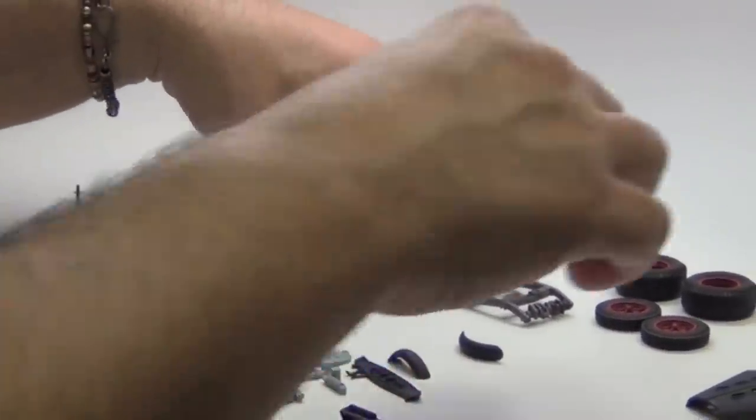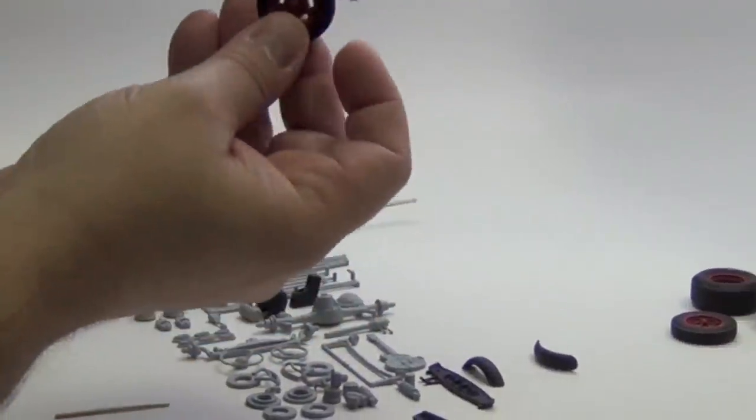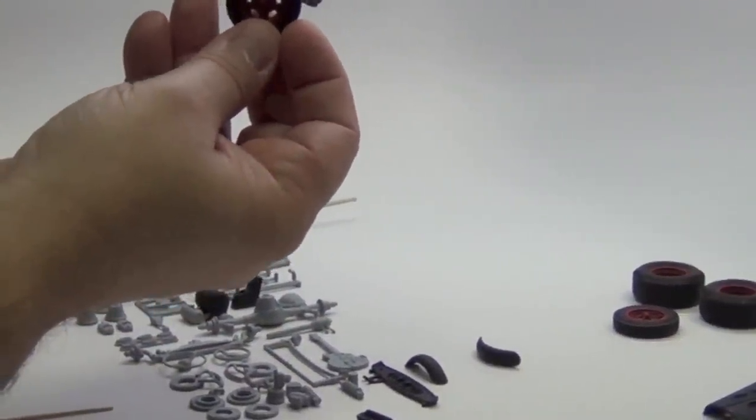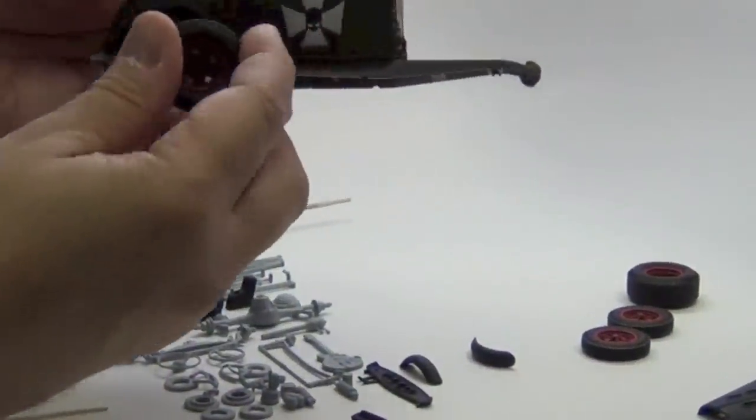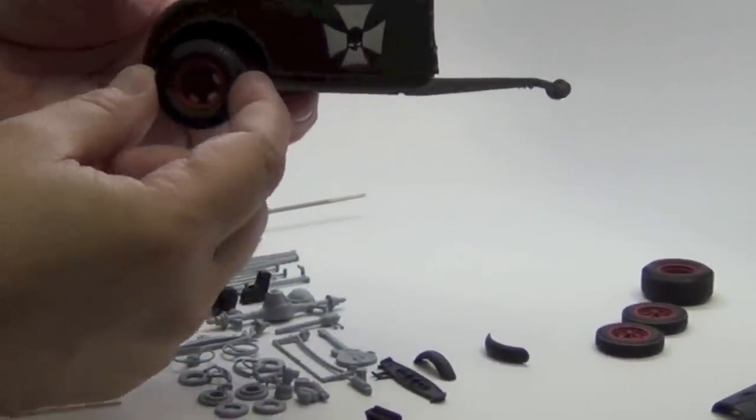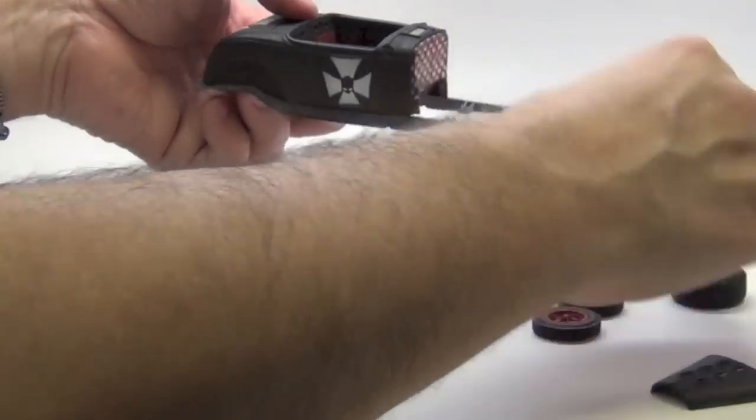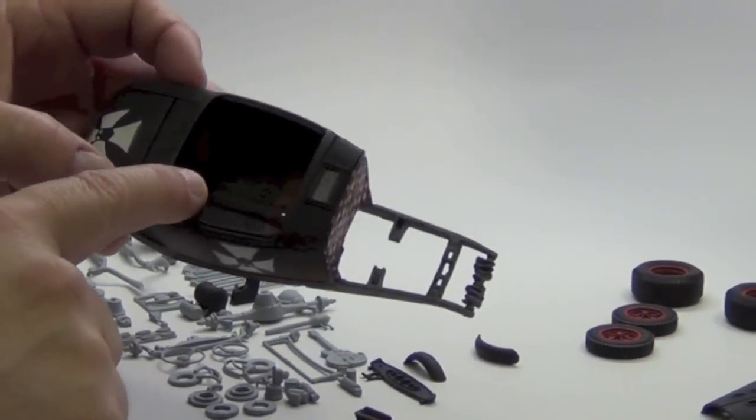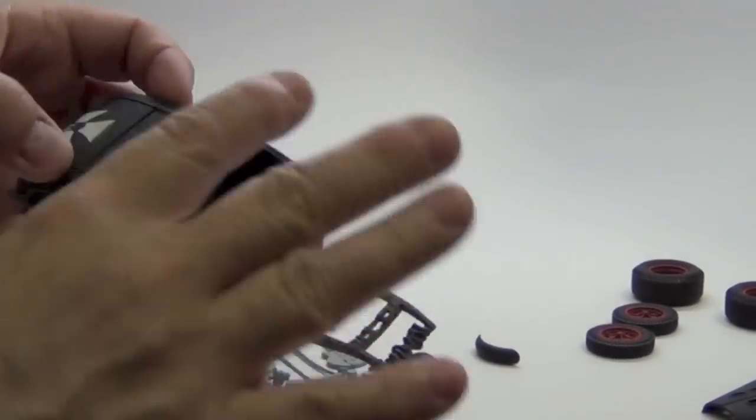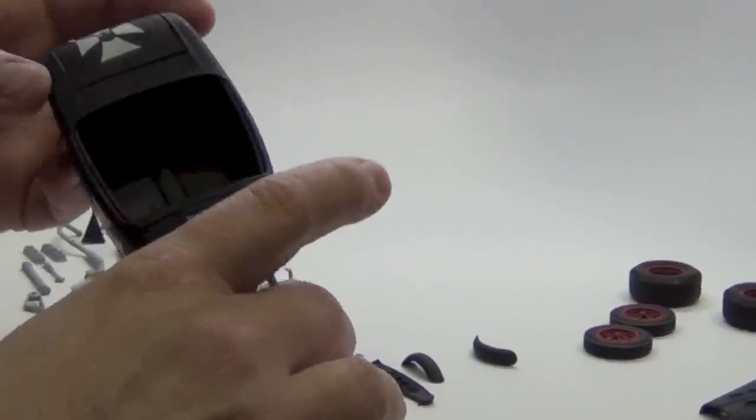And as I said, there's no weathering yet other than paint. The interior of course has got that wash too, so the interior is pretty much done. I just have to detail it, put the seats in and stuff like that.